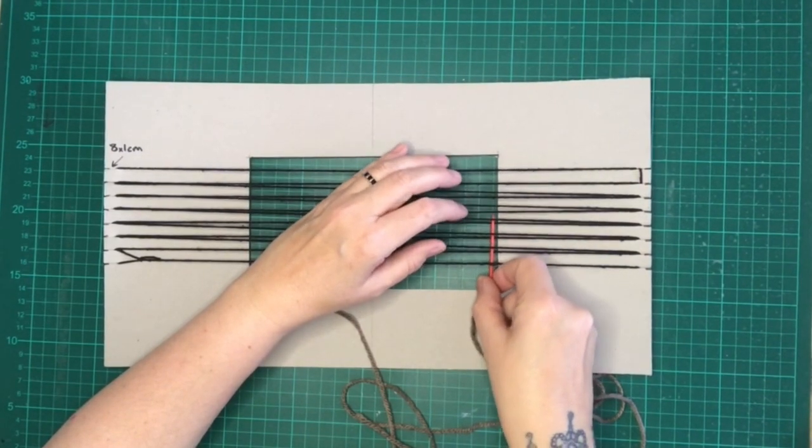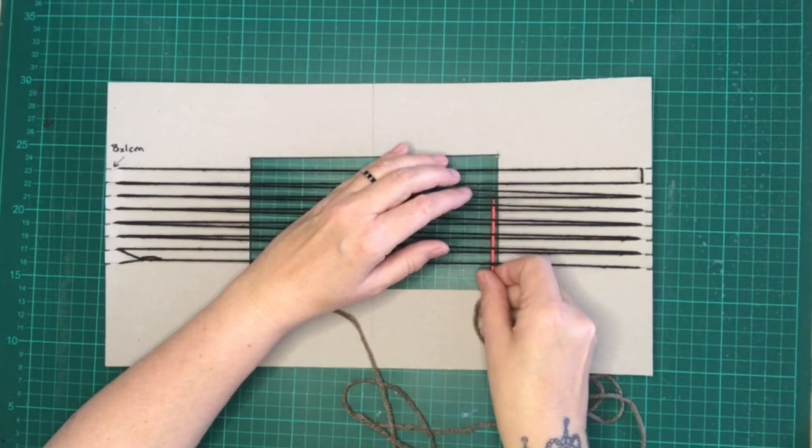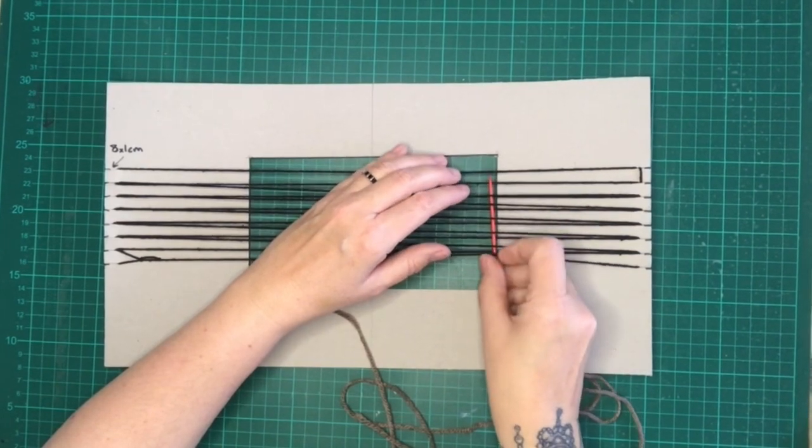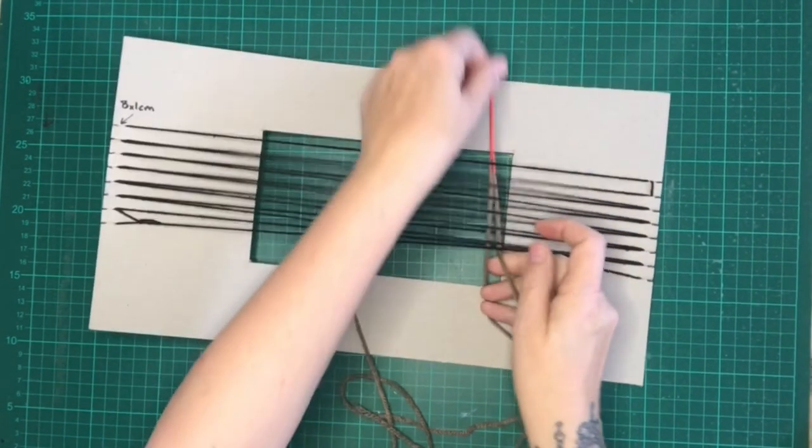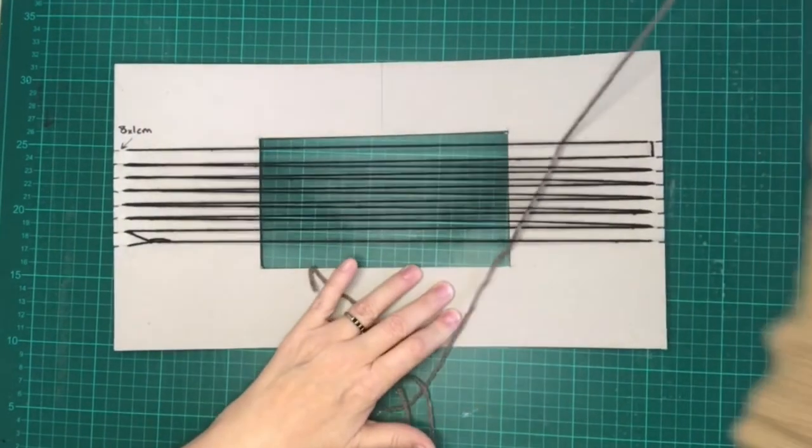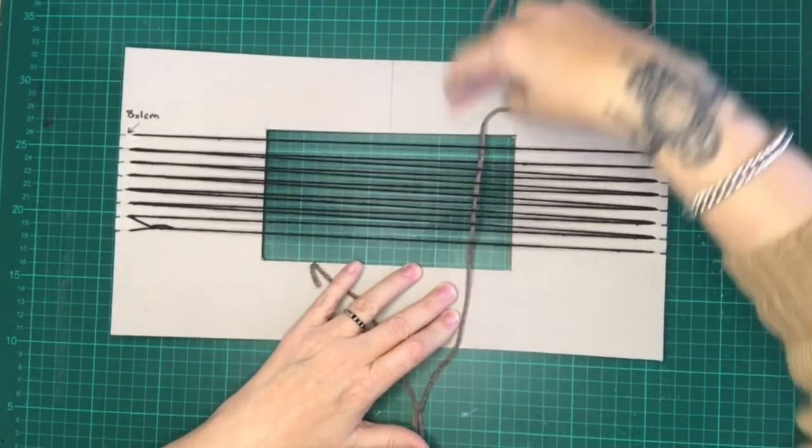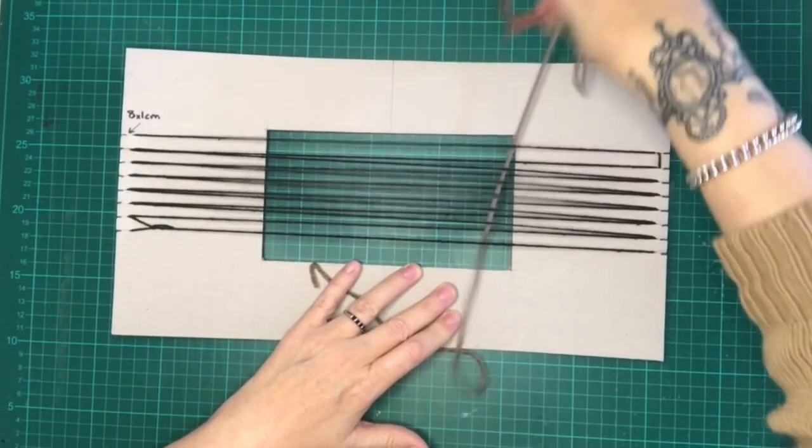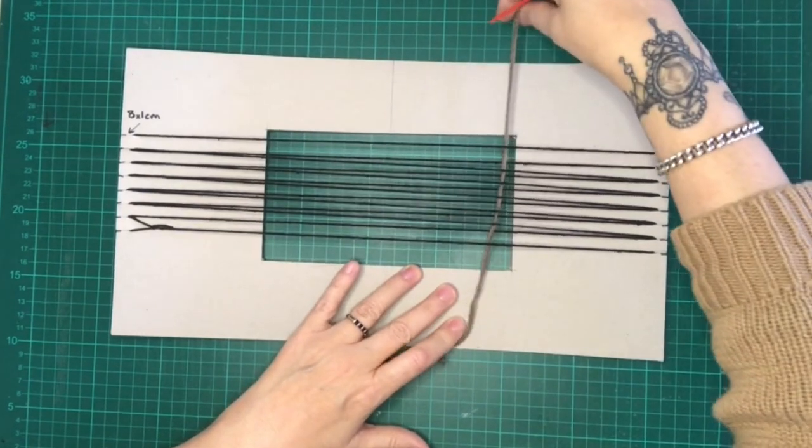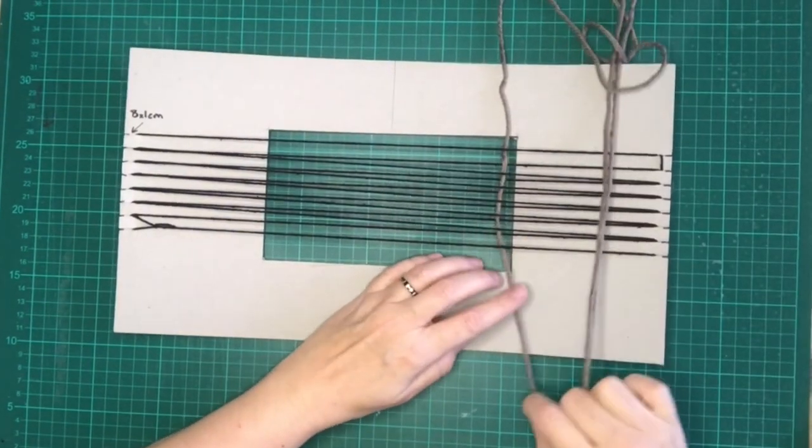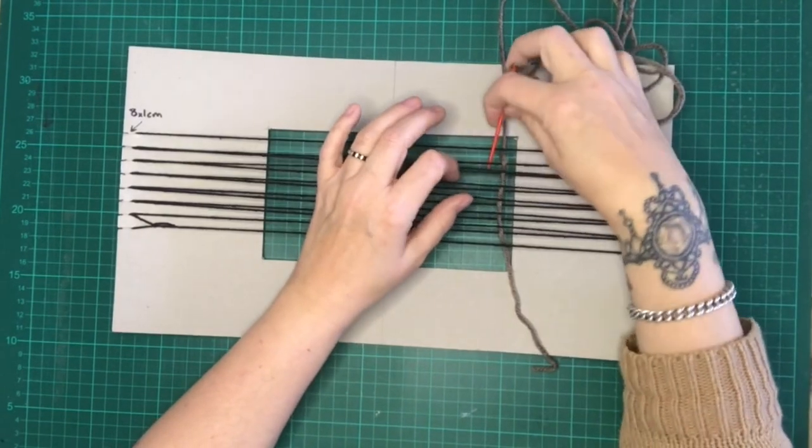Guide your needle through the weft threads, alternating between over and under each thread as you go. Thread through all of that wool right to the very end but leave a tail that we're going to sort out later.